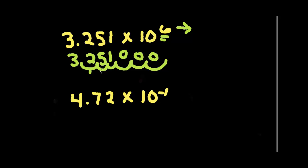And you can see we have 1, 2, 3, 4, 5, 6 places. So we end up with 3,251,000 as our answer.